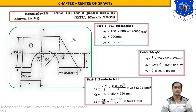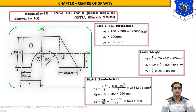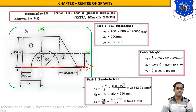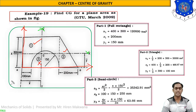For the second numerical, we find the CG of a plane area. Draw the x-axis from the bottom and y-axis from the left side of the section. Part one is a rectangle, part two is a triangle, and part three is a semicircle to be subtracted. Dimensions are given in the figure.